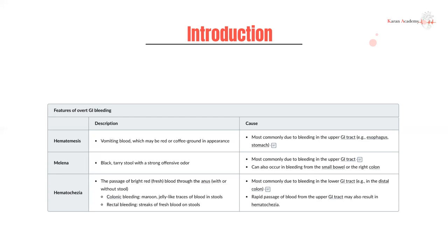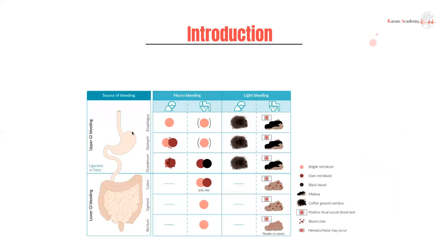You can also have hematochezia with upper GI bleeds. If the bleeding is so quick that it's just flowing through rapidly and not being digested, that can present with hematochezia. One of the big causes for that would be a bleeding peptic ulcer.